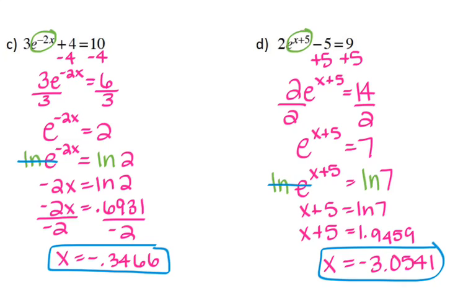Alright, so that is everything for the lesson on natural logarithms. That gives me negative 3.0641.